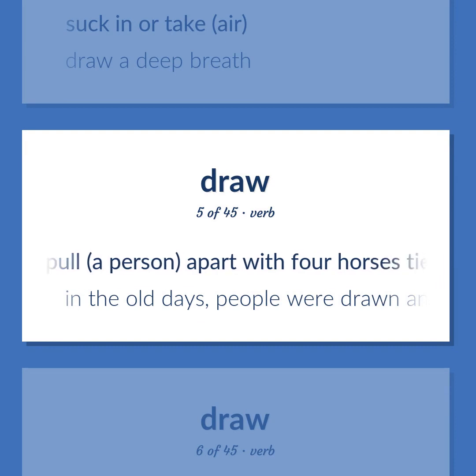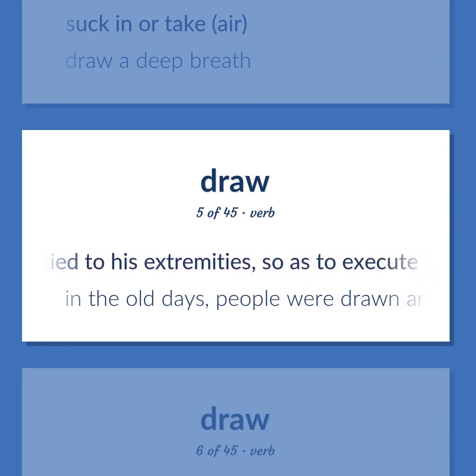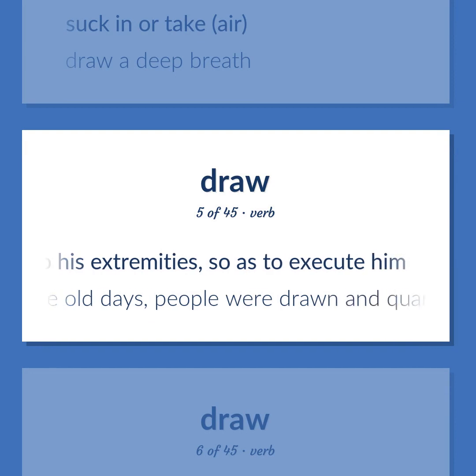Pull a person apart with four horses tied to his extremities so as to execute him. In the old days, people were drawn and quartered for certain crimes.